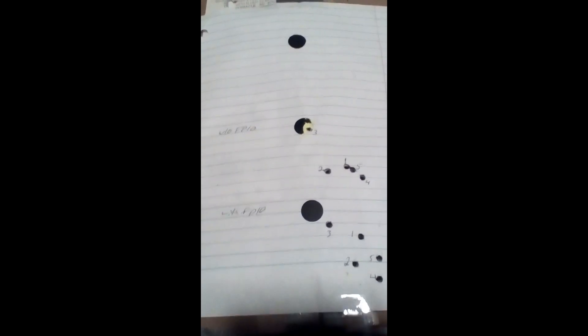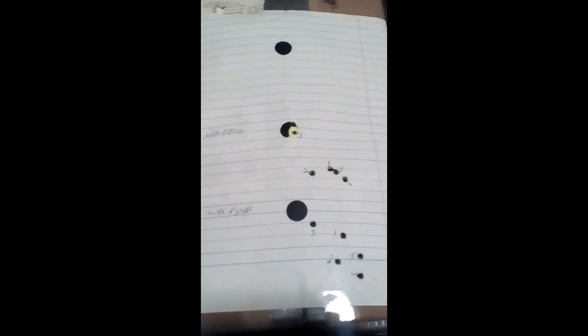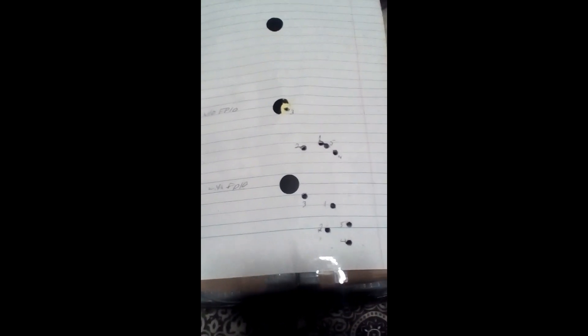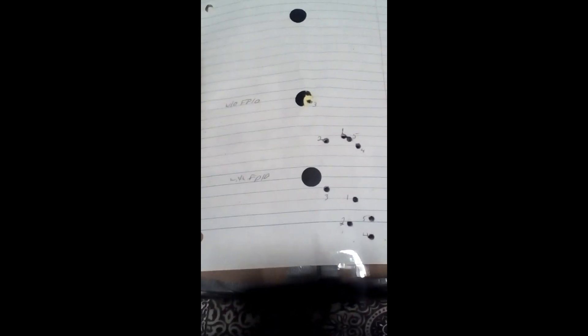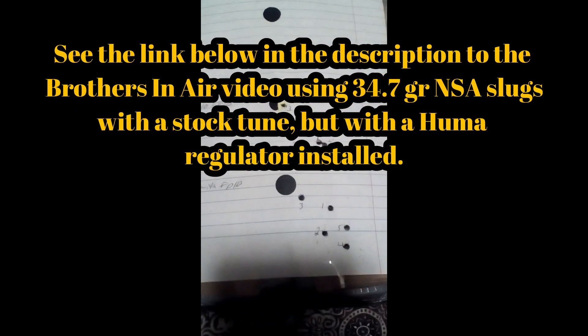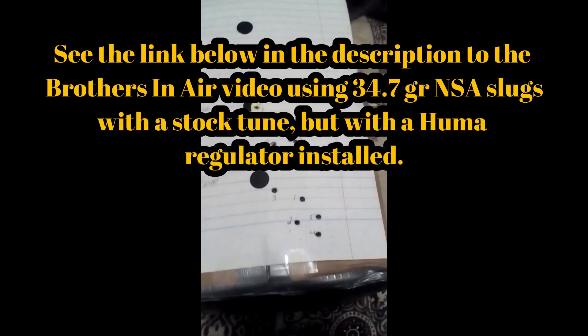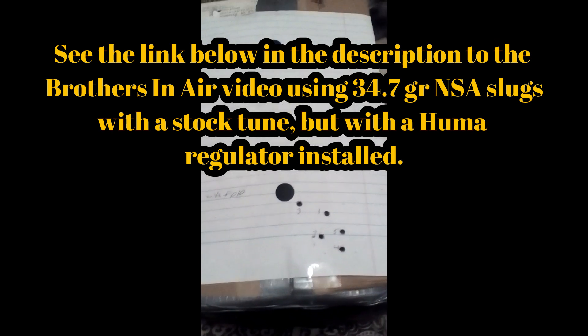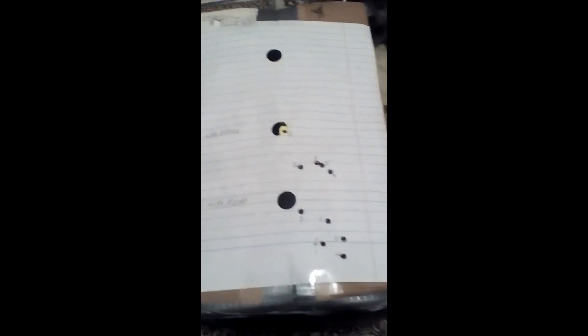I'm using the NSA Nielsen Specialty Ammo Slugs. These are 34.7 grain. And the reason I wanted to check them is because I turned the speed back down on the guns. And I watched Brothers and Air, and he was getting excellent accuracy out of these. And they also have a new slug out that fits the choke of the barrel pretty well. So I wanted to try mine again. I figured, you know, why not? We'll just do it at 35 yards and same thing, same exact thing.